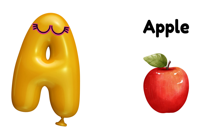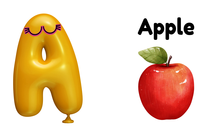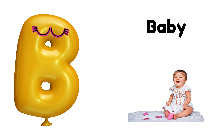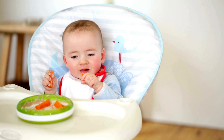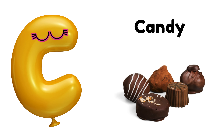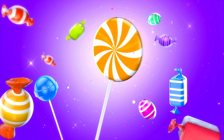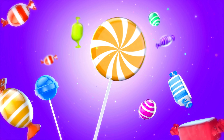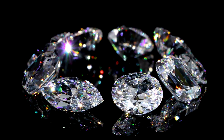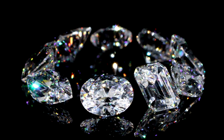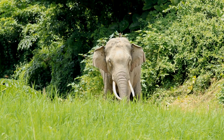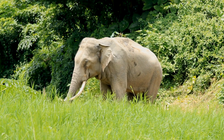A is for Apple, A-A-Apple, A-A-Apple, A-Apple. B is for Baby, B-B-Baby, B-B-Baby, B-Baby. C is for Candy, C-C-Candy, C-Candy. D is for Diamond, D-D-Diamond, D-D-Diamond, D-Diamond. E is for Elephant, E-E-Elephant, E-E-Elephant, E-Elephant.